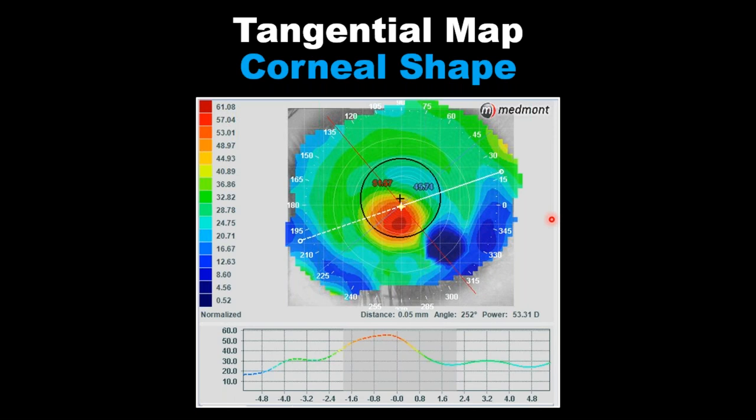Vamos a cambiar ahora a mapa tangencial — el mapa tangencial nos da forma, localización y tamaño. En este caso tenemos la rayita negra que indica la pupila y el mapa nos está diciendo que básicamente ese cono que tenemos en esa área está totalmente metido en el área de la pupila. Si el cono está fuera del área de la pupila, quizás la agudeza visual que puede obtener el paciente sea buena; sin embargo si está en el mismo centro de la pupila obviamente va a ser mucho más difícil.